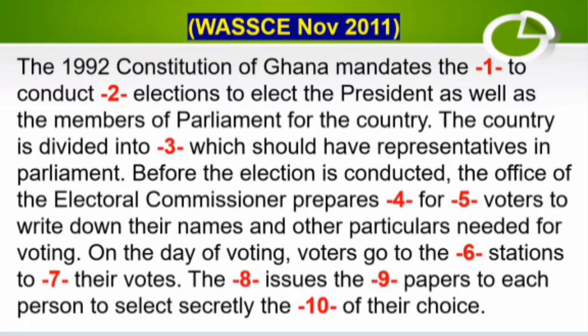The country is divided into DASH which will have representatives in parliament. Before the election is conducted, the office of the Electoral Commissioner prepares DASH for DASH voters to write down their names and other particulars needed for voting. On the day of voting, voters go to the DASH stations to DASH their votes. The DASH issues the DASH papers to each person to select secretly the DASH of their choice.